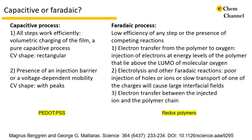Low efficiency of any elementary step, or the presence of competing reactions, will lead to a faradaic process. For example, electron transfer from the polymer to oxygen occurs if injection of electrons at energy levels of the polymer lies above the LUMO of molecular oxygen. Poor injection of holes or ions, or slow transport of one of the charges, will cause large interfacial fields and result in electrolysis. The injected ions and polymer chains can also undergo electron transfer, hence a faradaic process. Because PEDOT:PSS shows high mixed ionic and electronic conductivity, all steps are efficient and hence it is capacitive. In comparison, redox polymers show faradaic behavior due to their lower electronic carrier mobilities. The method described in the perspective paper further offers ways to promote or suppress faradaic reactions of polymers by controlling the five elementary steps.